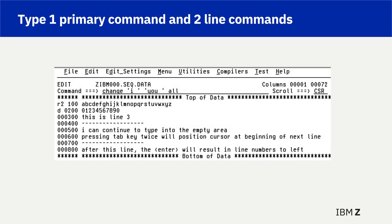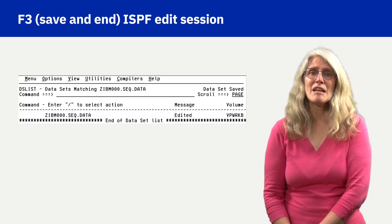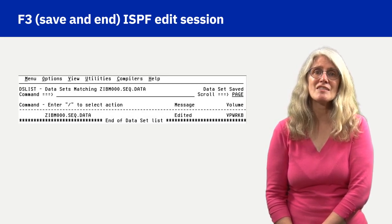The edit session shown includes three separate changes: 1. Change all references to lowercase i to lowercase u. 2. The first data line number was overtyped with R2 to replicate this line two times. 3. The second data line number was overtyped with D to delete this line. Pressing Enter following the three typed primary and line command changes resulted in the changes shown to the right of the yellow box, with the number 2 indicating the line was changed as a result of the primary command to change all occurrences of lowercase i to lowercase u. Pressing F3 or entering the Save command and the End command would save the changes and exit the ISPF edit session. Observe the dataset saved message in the upper right section of the screen.